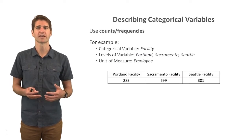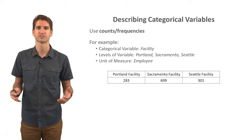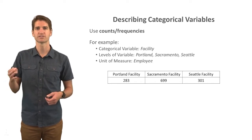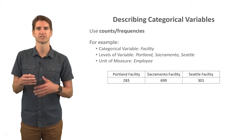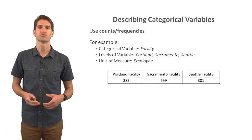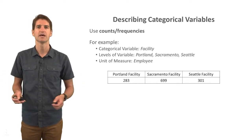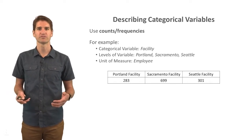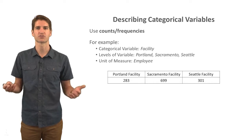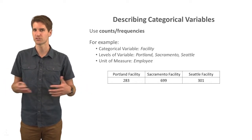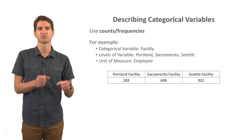In terms of describing categorical variables, we can use counts or frequencies. For example, a categorical variable might be the facility that employees work in, with three different levels: Portland, Sacramento, and Seattle. The unit of measure is the employee — how many people are working in each facility. We have 283 people in the Portland facility, 699 in the Sacramento facility, and 301 in the Seattle facility. This is an example of counts or frequencies.